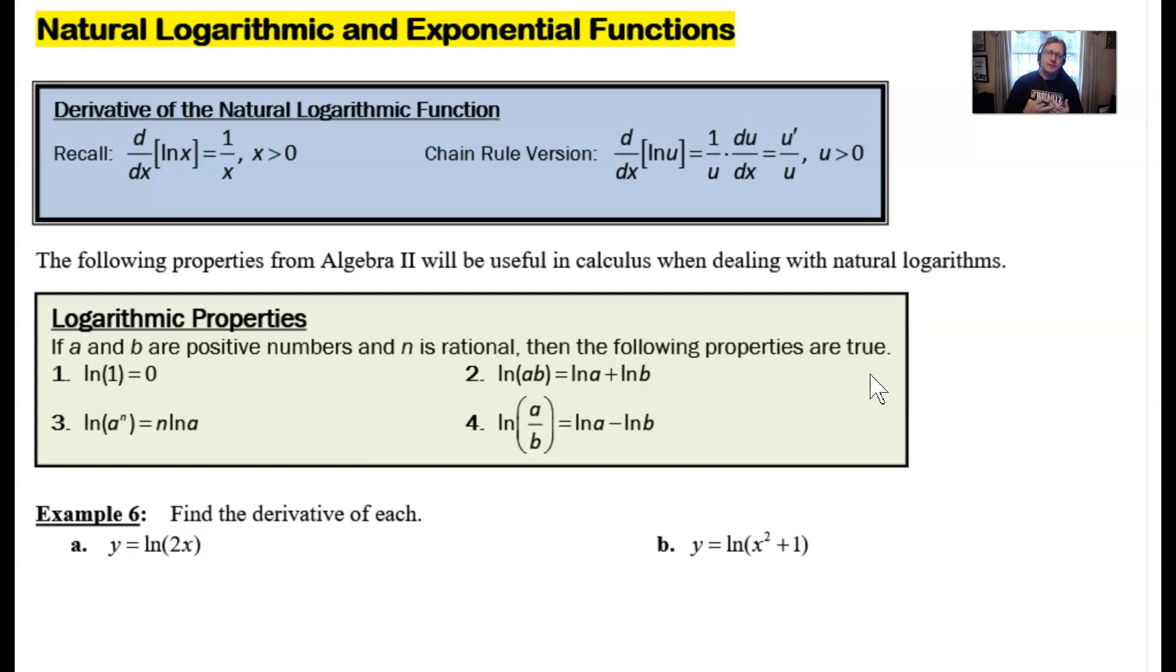Reminding how do we take the derivative of just simply the natural log of x. This particular derivative formula has already been presented to you, and maybe you've gone through various processes to illustrate why it's true, whether graphically. But you need to be very confident that the derivative of the natural log of x is 1 over x. The x greater than 0 is a reminder that x cannot be 0 or negative, since the domain of ln(x) only allows x to be positive anyway. The domain of the derivative is also the domain of the original function.